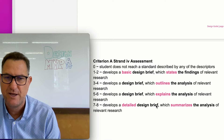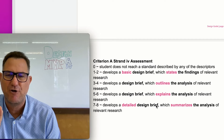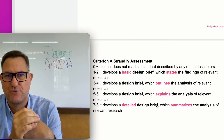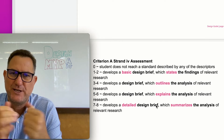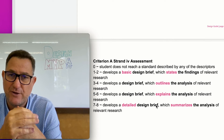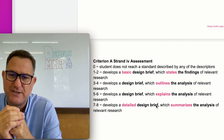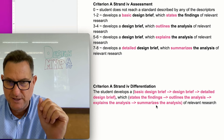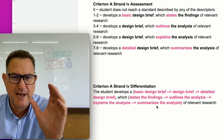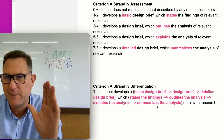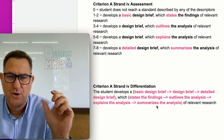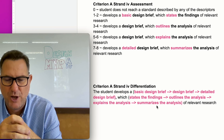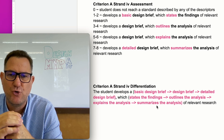For the second part of the assessment criteria regarding your research: if you just state some findings, you'll only get a score of two. If you can outline your research findings and the analysis, you can get three or four. If you explain the research, you can get five or six. But for a score of seven or eight, you need to summarize the analysis of the relevant research. So for Strand 4, we're moving from a basic design brief to a detailed design brief, and for research we need to dig deeper and analyze it. That's how you'll get top marks for Criterion A, Strand 4. Good luck.